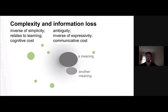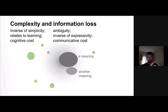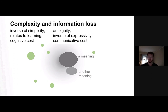Another way of looking at it is through the framework of complexity and information loss, which has proven quite fruitful in recent years. Complexity here means just 'not simple' — in the case of lexicons, it's many words. If you have many words, you incur cognitive costs, because you have to learn and memorize them. Information loss refers to ambiguity: if you're ambiguous, you're not expressive and you incur a communicative cost — you might miscommunicate and be misunderstood, which can lead to bad things.